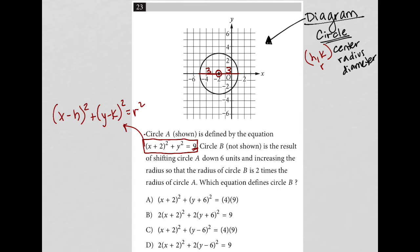Okay, so circle B, not shown, is a result of shifting circle A down 6 units and increasing the radius so that the radius of circle B is 2 times the radius of circle A. So we're going from a radius of circle A equals 3 to a radius of circle B equals 6.